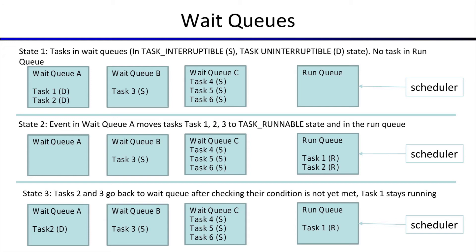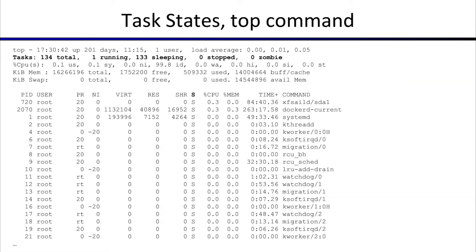How can you see what task is where? You can use the `top` command — we talked about top in early stages of scheduling. Here's a standard view: you can see the total process count — 134 total, one running, 133 sleeping — because there's really nothing happening on this VM. Zero stopped and zero zombie. You can read the vertical column in the process data labeled S, and most tasks show up in the sleeping state S.